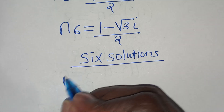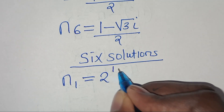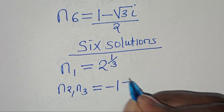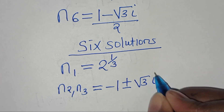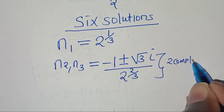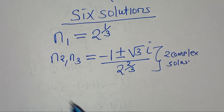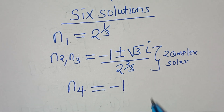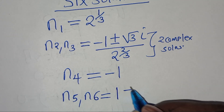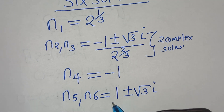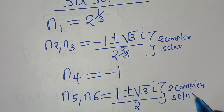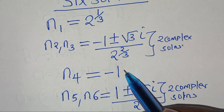To summarize all 6 solutions: n₁ equals 2 to the power of 1 over 3 (the cube root of 2); n₂ and n₃ equal (minus 1 plus or minus root 3 i) divided by 2 to the power of 2 over 3 — two complex solutions; n₄ equals minus 1; and n₅ and n₆ equal (1 plus or minus root 3 i) divided by 2 — two more complex solutions. In total there are 4 complex solutions and only 2 real solutions.